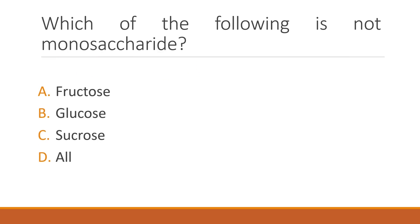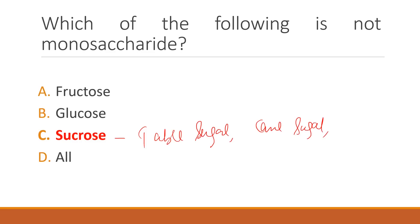Which of the following is not a monosaccharide? This is an easy one — the correct answer is option C: sucrose, which is called table sugar or cane sugar. Sucrose is basically a non-reducing sugar, and it is the sugar that plants transport from source to sink.